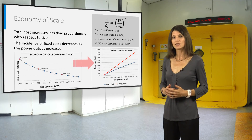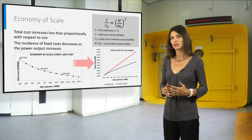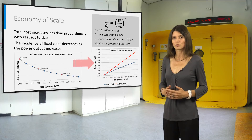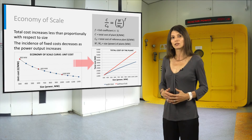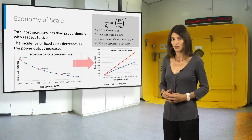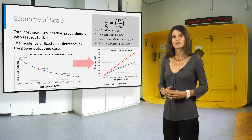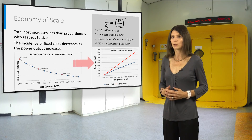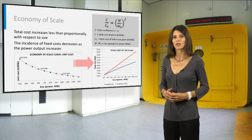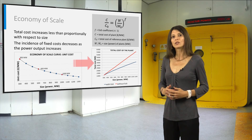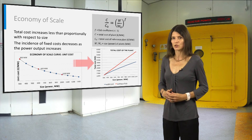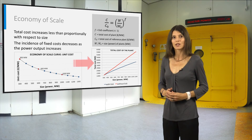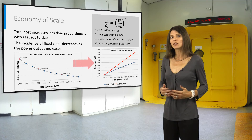Economy of scale significantly reduces the expected total cost of a large-sized plant. The effect of economy of scale is relevant in the nuclear industry, where capital construction costs are very high. This is the reason that pushed towards the maximization of the size of nuclear power plants throughout history. However, could there be a minimum in the economy of scale curve — a size beyond which economy of scale starts to reverse? For now, this is still an open question.